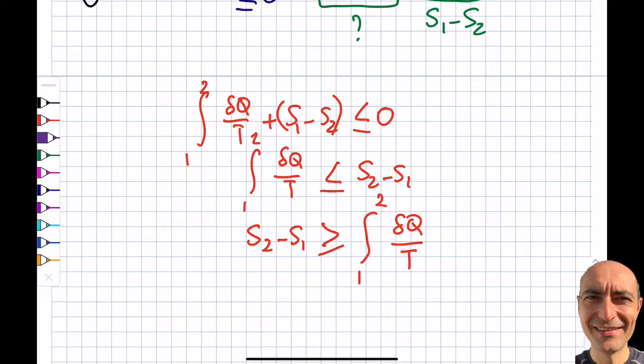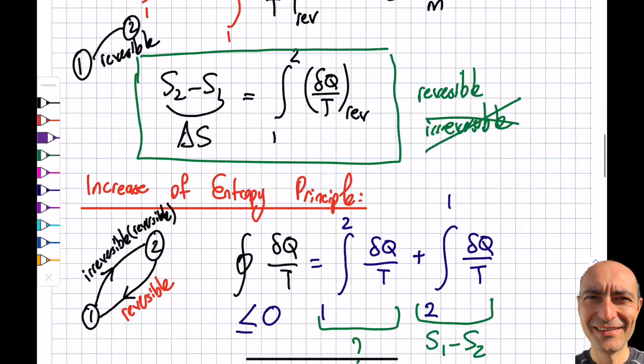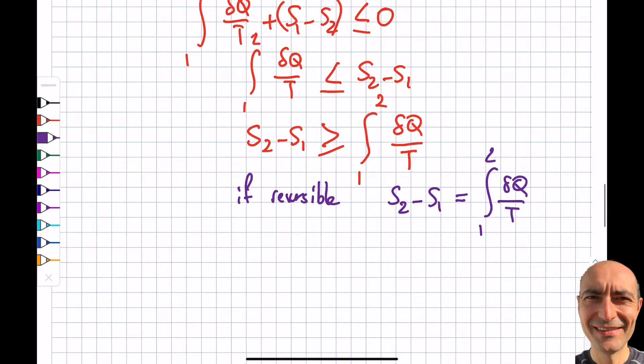And I'm going to write what I said. If reversible, I will be able to write this: s2 minus s1 is equal to 1 to 2, del q by t. Nothing new. I go up to the previous segment. This is exactly what I said. Nothing new in here. But what is new here is if it is irreversible, s2 minus s1 will be larger than 1 to 2, del q by t. That's what it is.